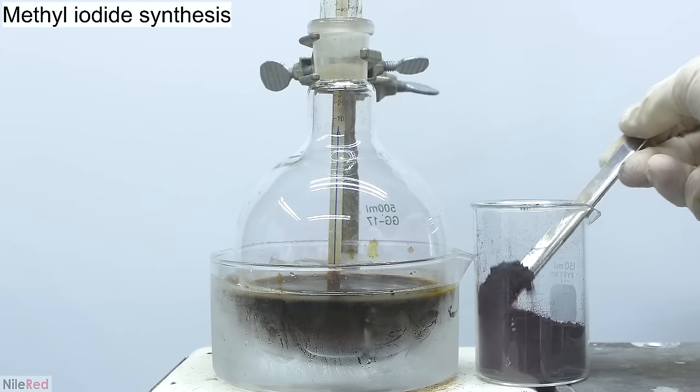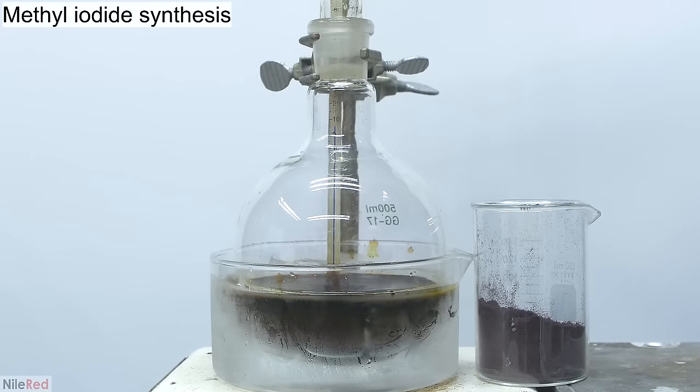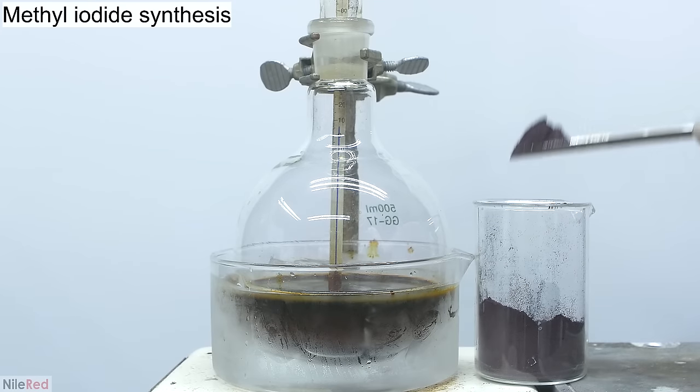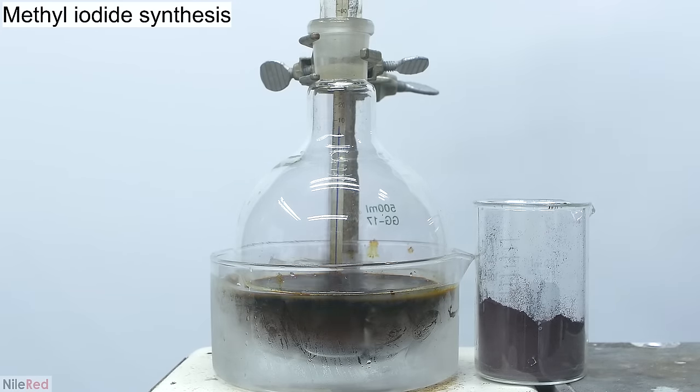Just as an example, I used 50 grams of red phosphorus in my methyl iodide video and to get it from striker pads, I would have had to strip something like 1600 boxes.